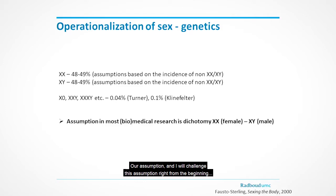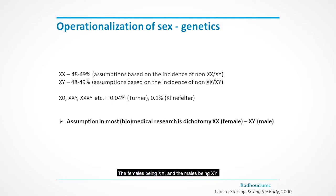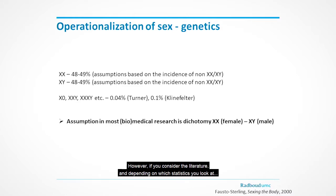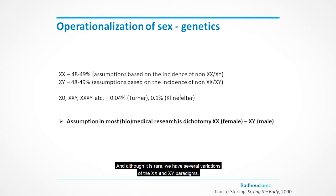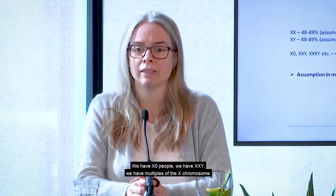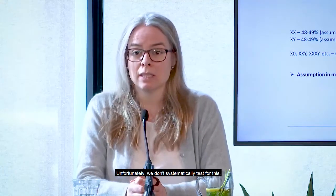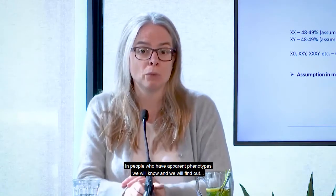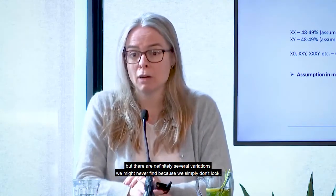Our assumption — and I will challenge this right from the beginning — is that the world is pretty much separated into XX and XY individuals, females being XX and males being XY. However, looking at the literature, not everybody is necessarily XX or XY. Although it is rare, we have several variations: X0, XXY, and multiples of the X chromosome. Unfortunately, we don't systematically test for this, and there are definitely variations we might never find out about because we simply don't look.